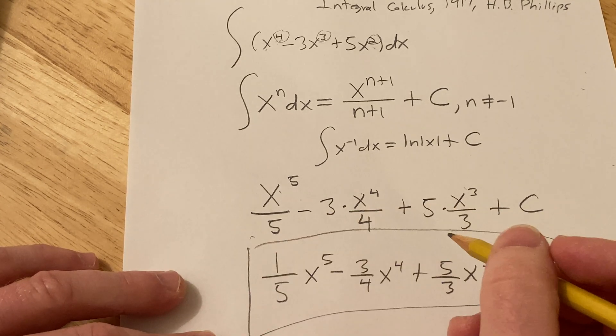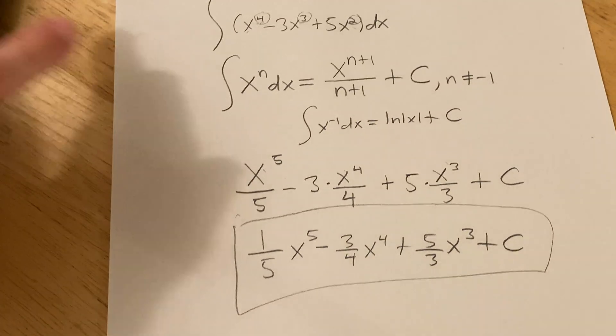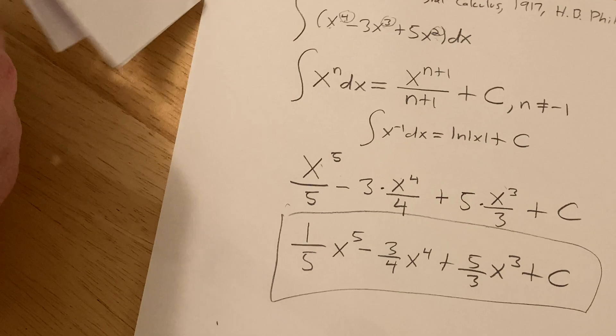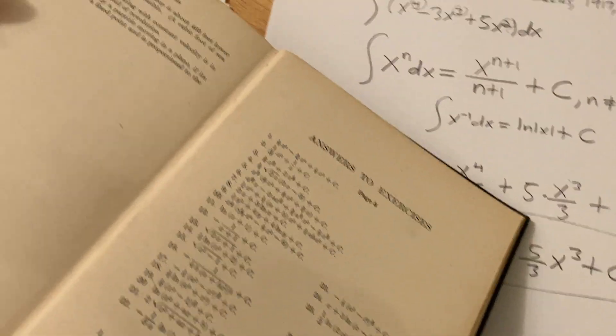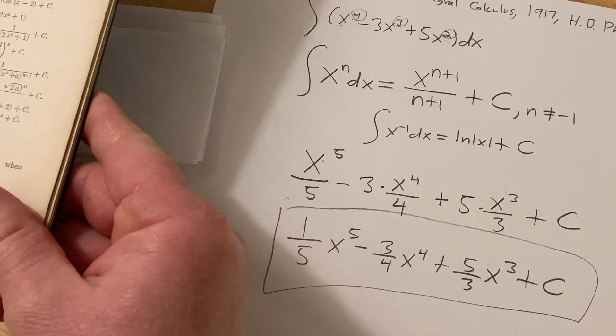And that would be the answer to the problem, and we can check our answer because this wonderful book has solutions to all of the problems. This book, by the way, I'm pretty sure it's out of print. So, yep, there's the answer there, and that looks like what we got. 3 fourths, 5 thirds, 1 fifth. 3 fourths, 5 thirds, 1 fifth. Yep.